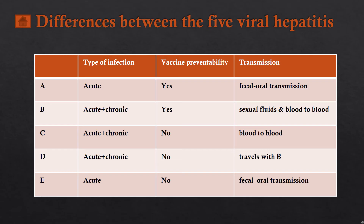Hepatitis C also has both chronic and acute phases, but unfortunately it does not have a vaccine, and it is transmitted by blood-to-blood contact.